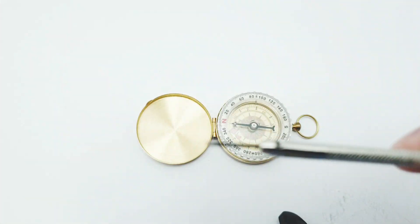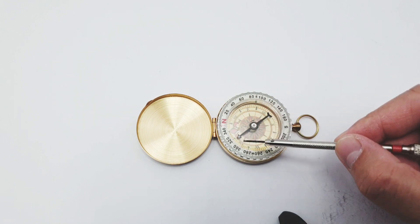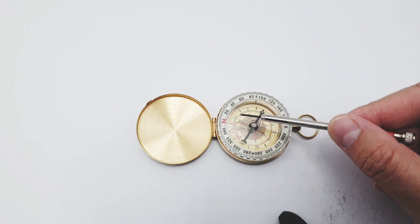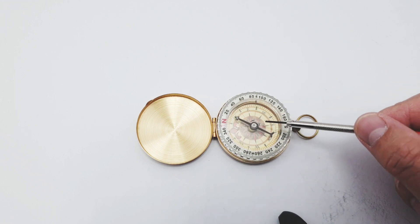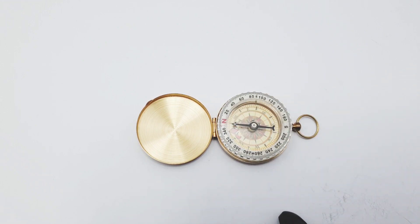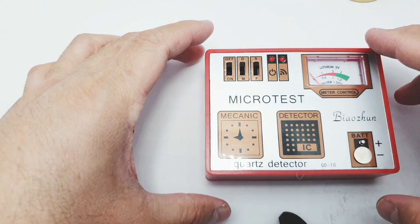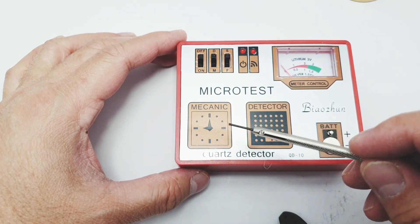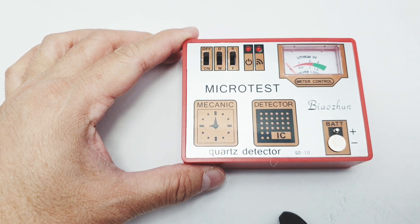Okay so here's a screwdriver. The screwdriver is magnetized clearly as you can see. If I hover it at the top of this compass the needle is moving, so it's affecting the compass function because it's magnetized. Now to remove or demagnetize the screwdriver we're going to use the demagnetization function.